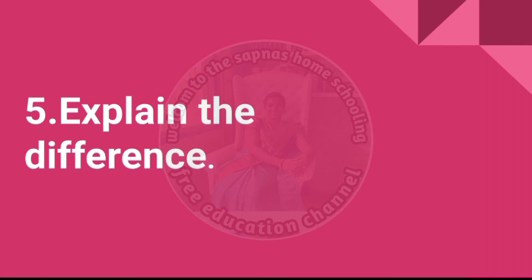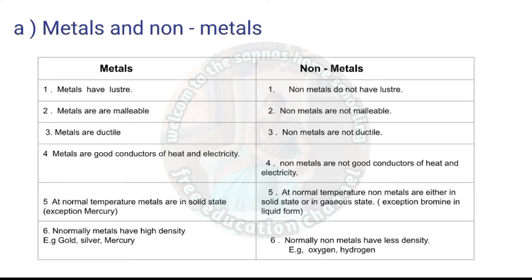Explain the difference between metals and non-metals. Metals have lustre; non-metals do not have lustre. Metals are malleable; non-metals are not malleable. Metals are ductile; non-metals are not ductile. Metals are good conductors of heat and electricity; non-metals are not good conductors of heat and electricity. At normal temperature, metals are in solid state, while non-metals are either in solid state or gaseous state.